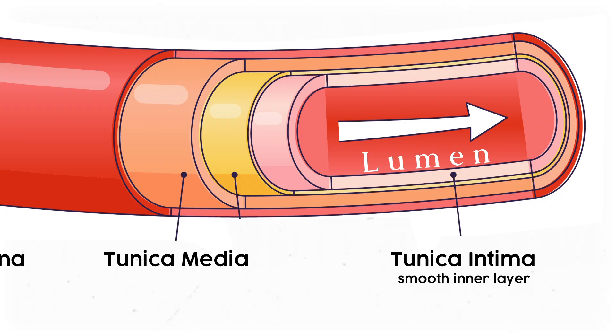Around that is the tunica media, a layer of smooth muscle that can contract and expand to accommodate blood flow. This is like wearing your hoodie — you can always zip or unzip, go hood up or hood down, or pull the drawstring depending on how cozy you want to be. A hoodie's main appeal is that it can adapt to changing needs, just like the tunica media.